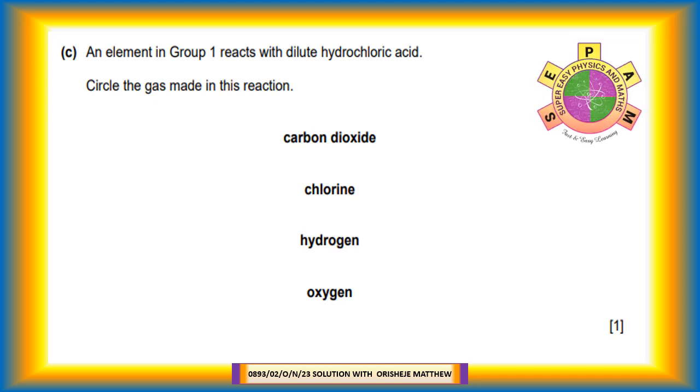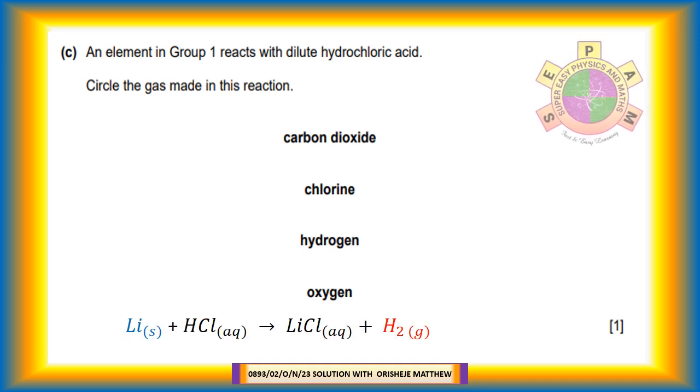Question 2c: An element in group 1 reacts with dilute hydrochloric acid. Circle the gas made in this reaction. Carbon dioxide, chlorine, hydrogen, oxygen. Lithium reacts with dilute hydrochloric acid to produce lithium chloride and hydrogen gas. The gas made in this reaction is hydrogen gas.